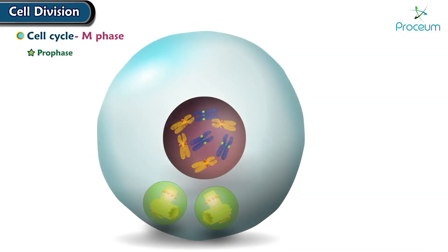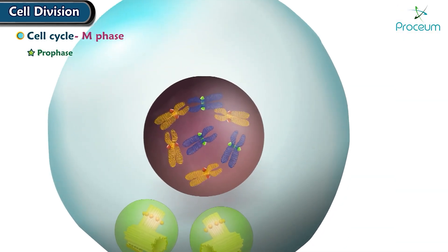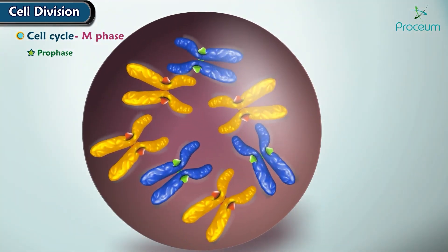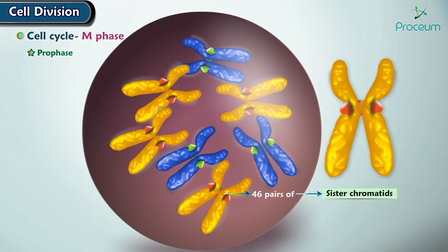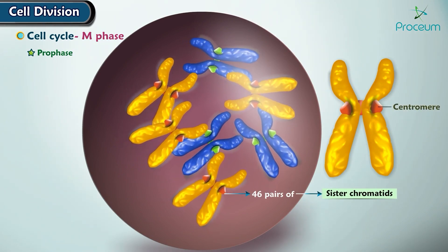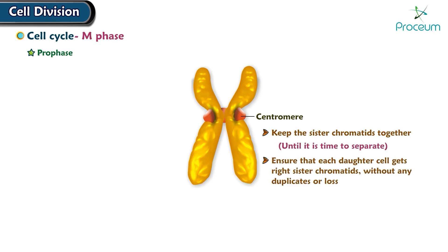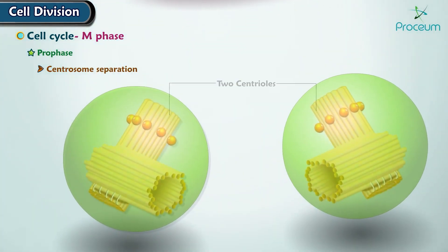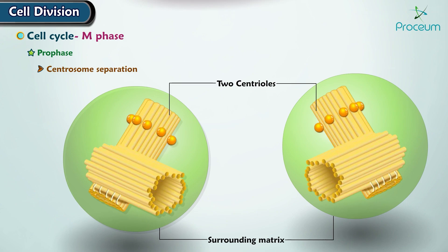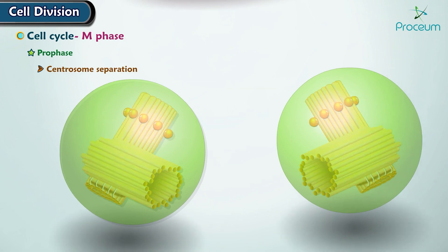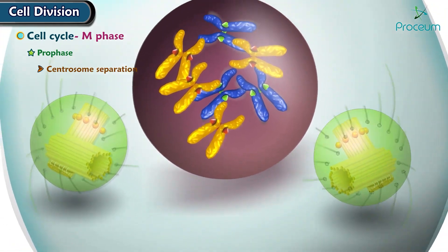Stage 1 — Prophase: Prophase is a stage during which the DNA condenses into 46 pairs of sister chromatids linked together at the center by a centromere. Centromeres keep the sister chromatids together until it is time to separate, ensuring that each daughter cell gets the right sister chromatids without any duplicates or loss. The centrosome — the point of origin of the mitotic spindle — consists of two centrioles and a surrounding matrix from which microtubules emerge. Prophase is also the stage of formation of the mitotic spindle.